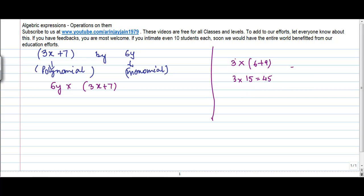But what happens if you multiply 3 by 6 and then add 3 by 9? So you first multiply 3 by 6, right, and then you add again 3 multiplied by 9.